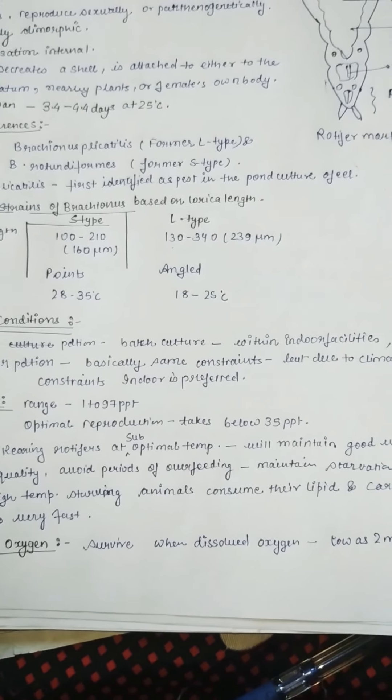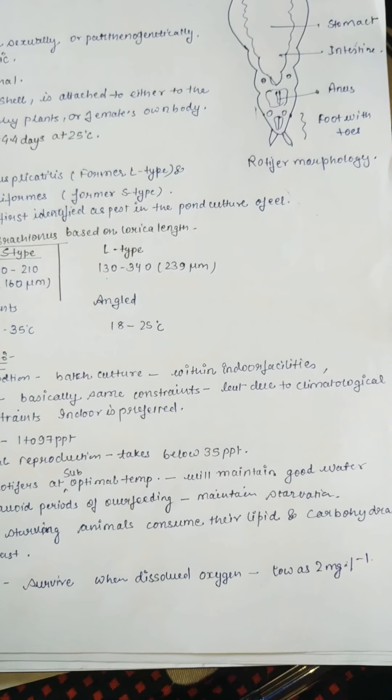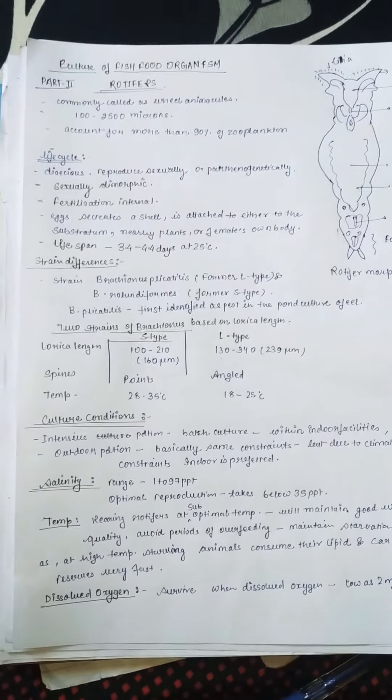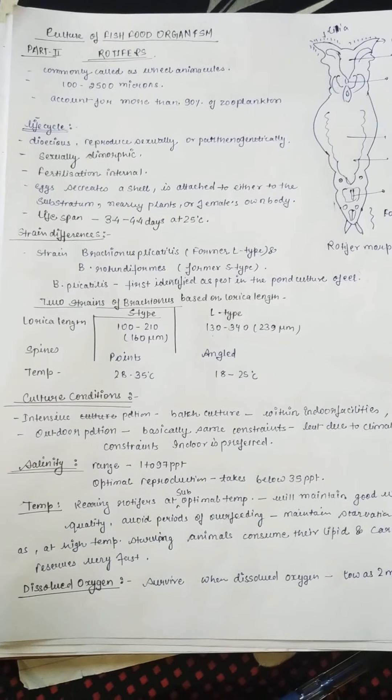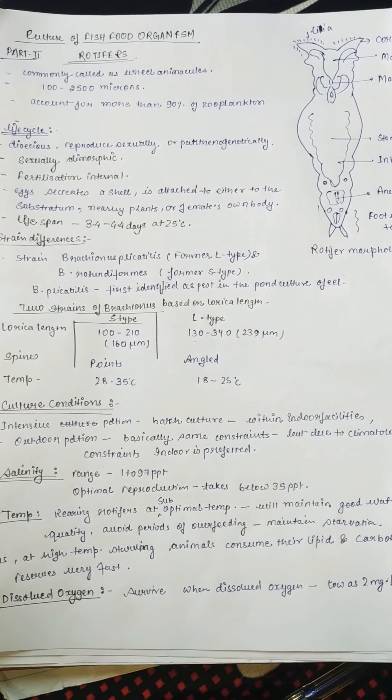Dissolved oxygen: rotifers survive when dissolved oxygen is as low as 2 milligrams per liter. This was rotifers, now we will continue with the rotifers next.